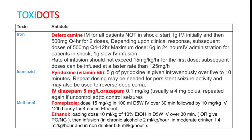For methanol poisoning, you can give fomepizole — dose 15 mg per kg body weight in 100 ml dextrose solution over 30 minutes, followed by 10 mg per kg body weight IV 12-hourly for 4 doses. Ethanol can also be given in a patient with methanol poisoning.